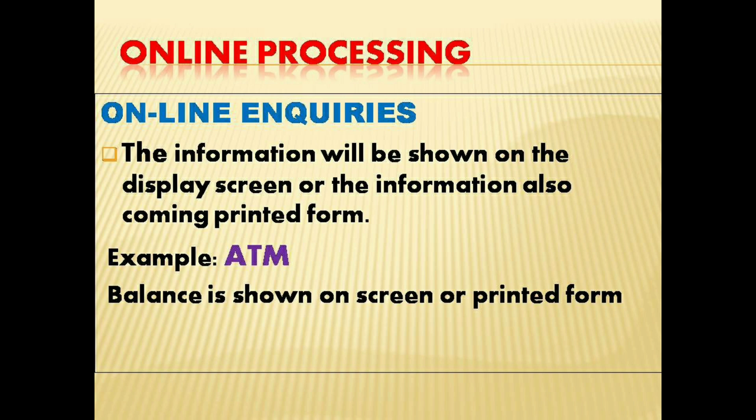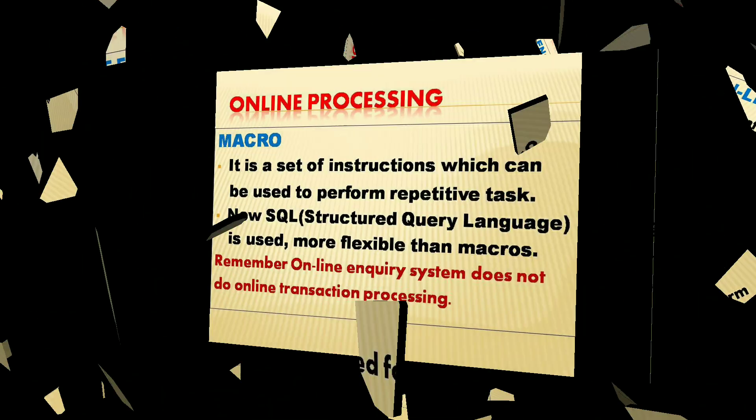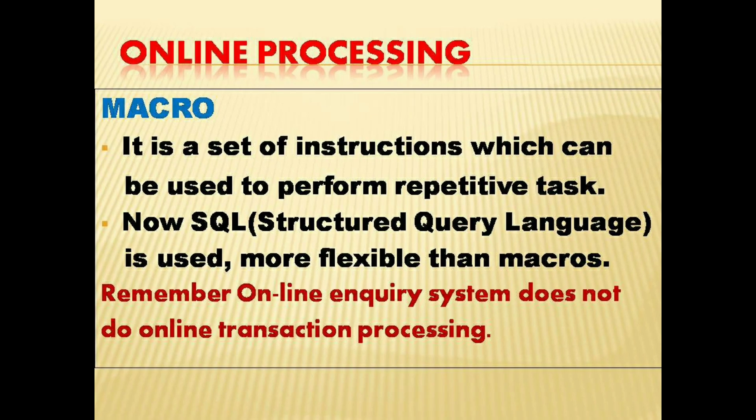ATM is a great example — you can find a display screen showing your balance, or get the balance in printed form. Now, a macro is a set of instructions which can be used to perform a repetitive task. If you are doing a repetitive task, that set of instructions is known as a macro.